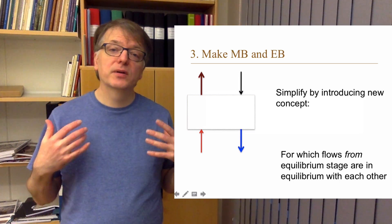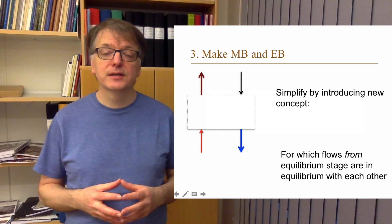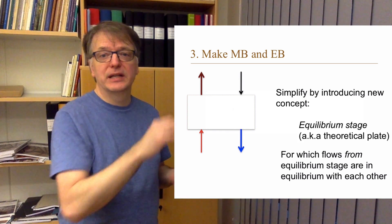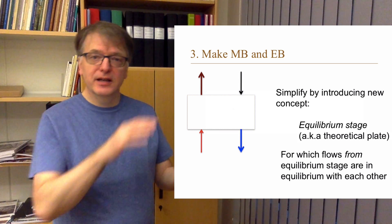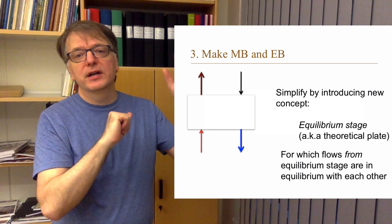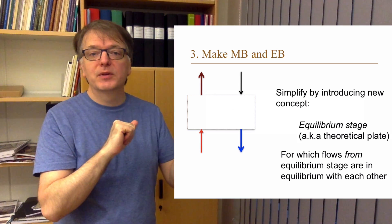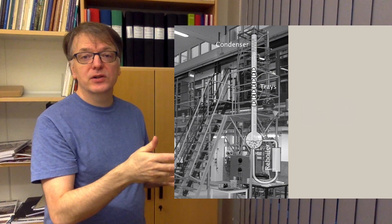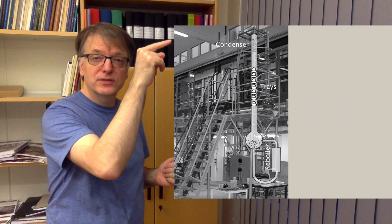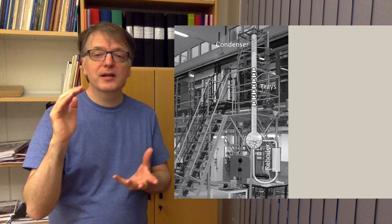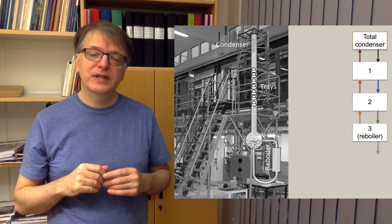McCabe-Thiele's graphical method for solving distillation problems is based on mass balances and energy balances over a mathematical construct called the equilibrium stage. An equilibrium stage is a section where the vapor flux from that layer is in equilibrium with the liquid flux from that layer. So we take our distillation column setup and instead of doing calculations for the actual physical trays, we do a mathematical model with equilibrium stages.